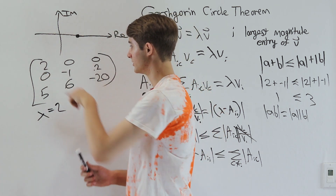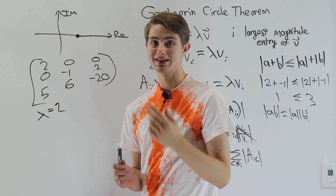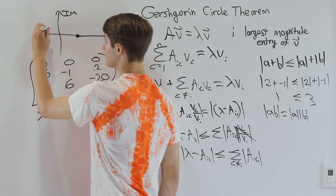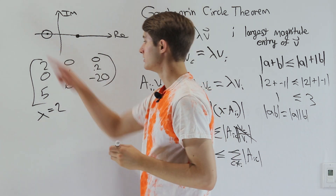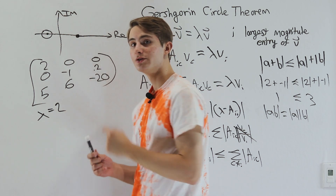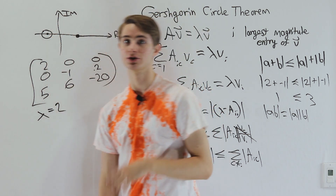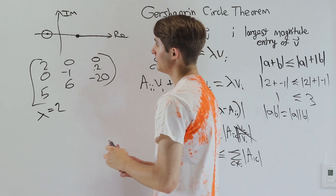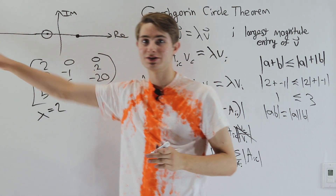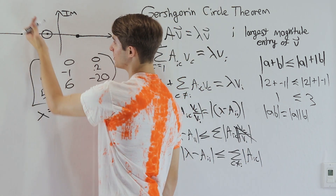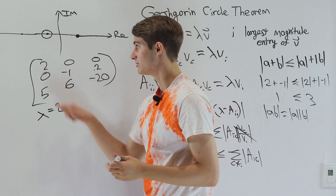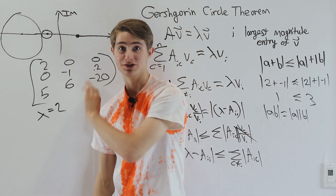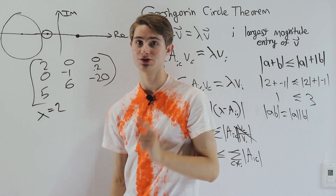Even though we don't know the exact eigenvalue in the second disk, we have a very precise range, so we can iterate using the shifted inverse power method efficiently. For the third row, we extend the real axis out to -20, centered there with a radius of 5 plus 6, which is 11. In this case we don't have much precision about where that eigenvalue is, but we do have a range thanks to these Gershgorin disks.